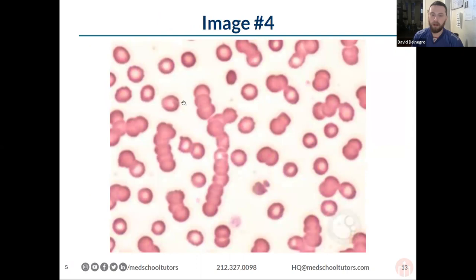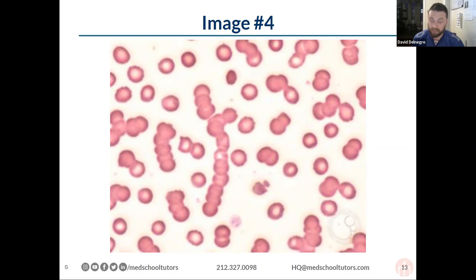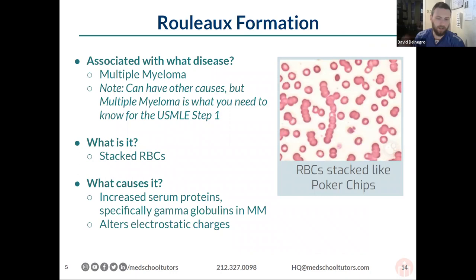Time to go to heme-onc land. Everyone has identified this one — it is indeed Rouleau formation, and yes, agglutination. Multiple myeloma, Rouleau formation — the electrostatic charges are altered and the red blood cells clump together like poker chips. How do you diagnose multiple myeloma? Immunoglobulins — specifically the SPEP/UPEP. You're going to have a large monoclonal spike because it's a cancer, a monoclonal expansion.